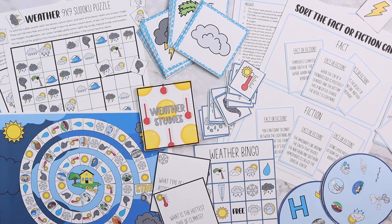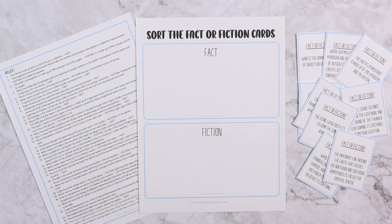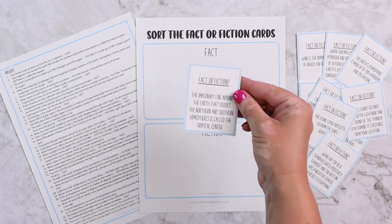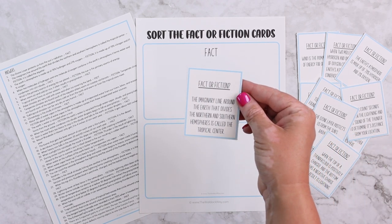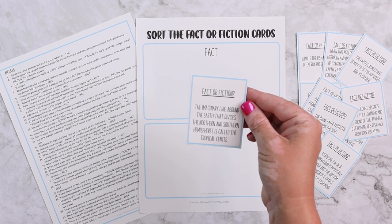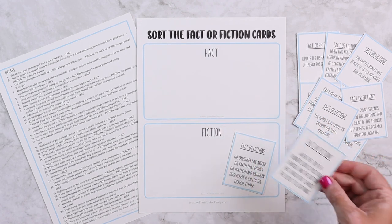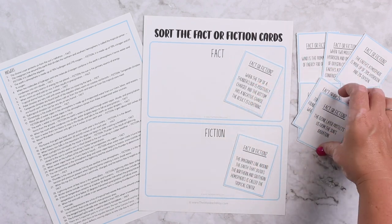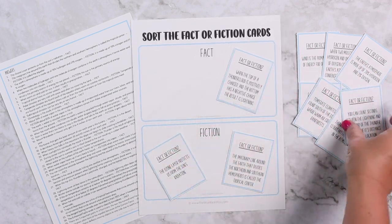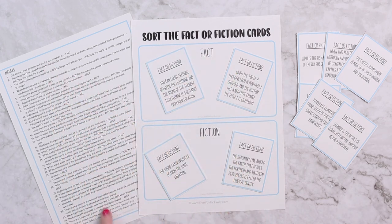No Waldock Way unit is ever complete without games, and this unit has a ton of them. First up, sort the fact or fiction cards — there are 36 cards, each either a fact or fiction statement. Kids sort them, like deciding that 'the imaginary line dividing the northern and southern hemispheres is called the tropical cancer' is fiction. An answer key is provided.